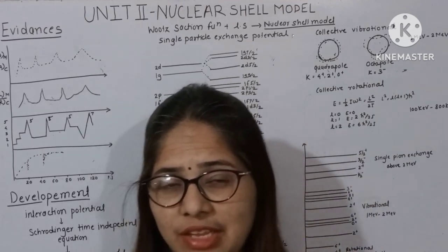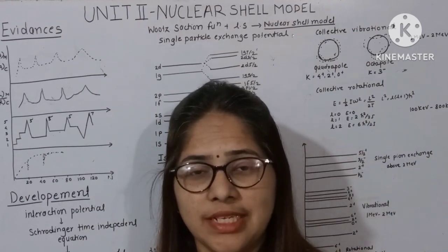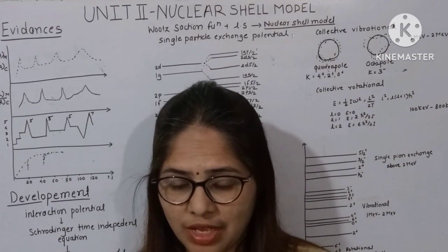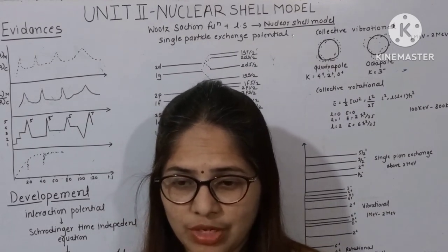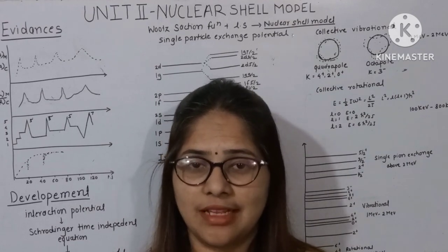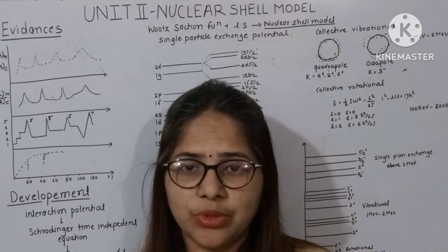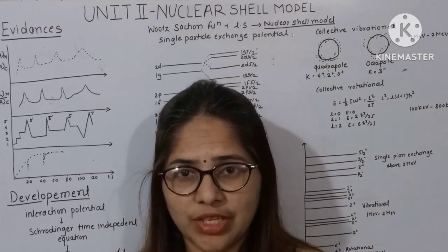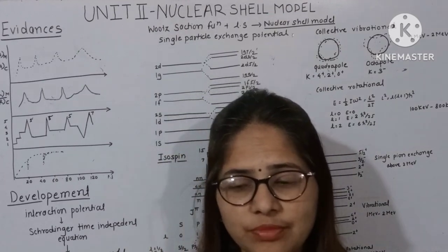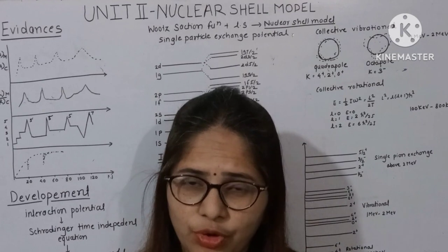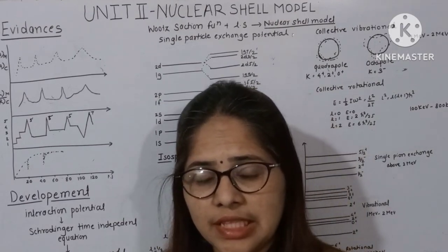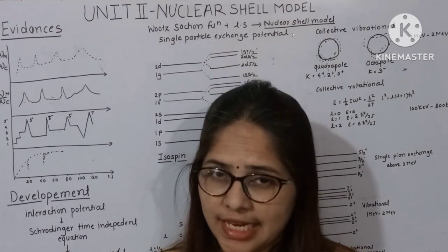Scientists concluded from many evidences that there must be a shell model present inside the nucleus, just like when we see the periodic table — going from one row to another or one column to another, as the number of electrons changes, the properties change drastically. The same idea was put forth for the nuclear shell model.